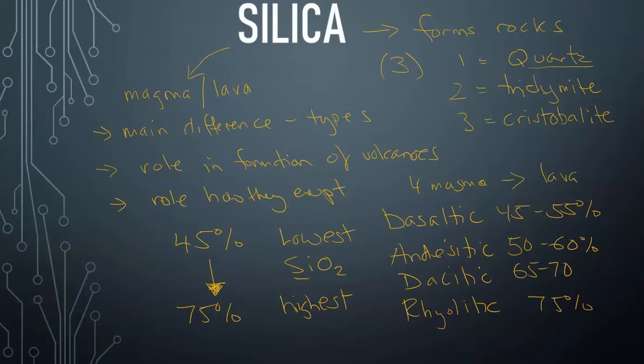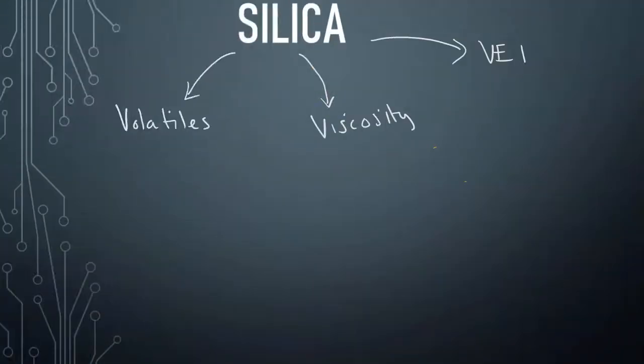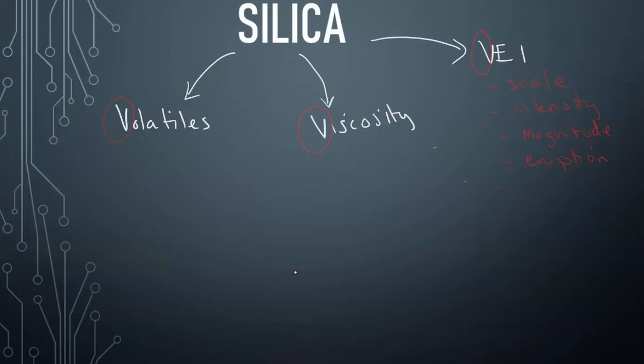So silica is also involved with the three V's: volatiles, viscosity and VEI. Now, VEI is a scale of intensity and magnitude of the eruption based on various features which are controlled by the magma and the energy, which also relates to the time. And this is going to be controlled by the silica percentage by weight.